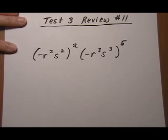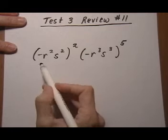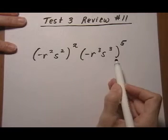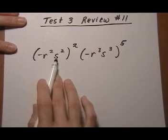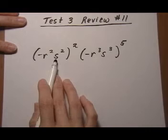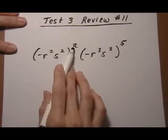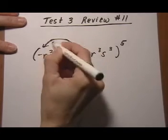Test 3 Review Number 11. Here we have two different sets of parentheses being raised to a power. And on the inside, because everything in the parentheses is being multiplied together, that means that this exponent will be given to each factor.